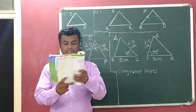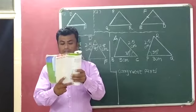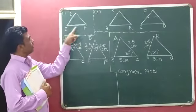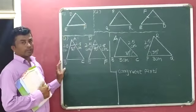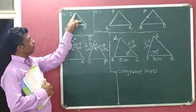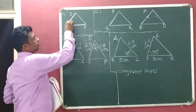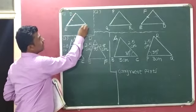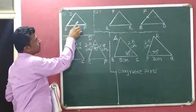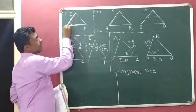Question number 1: Which angle is included between the sides DE and EF of triangle DEF? Triangle DEF is already drawn here. We have to identify which angle is included between side DE and side EF. This is side DE and this is side EF. In between side DE and side EF, angle E is included.